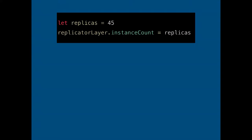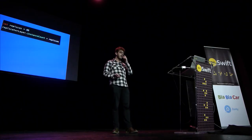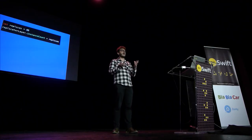Next, how do we tell the CAReplicatorLayer how many replicas it should create? The Replicator Layer has a property called instanceCount, which accepts an integer specifying how many copies you want, including the source layer.